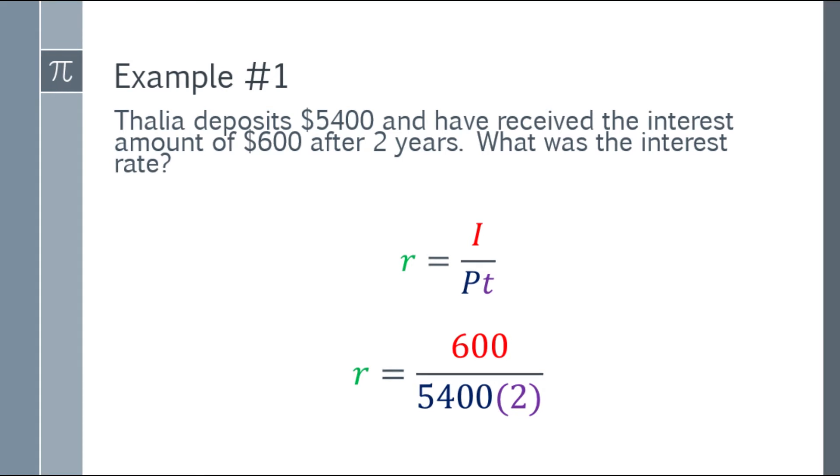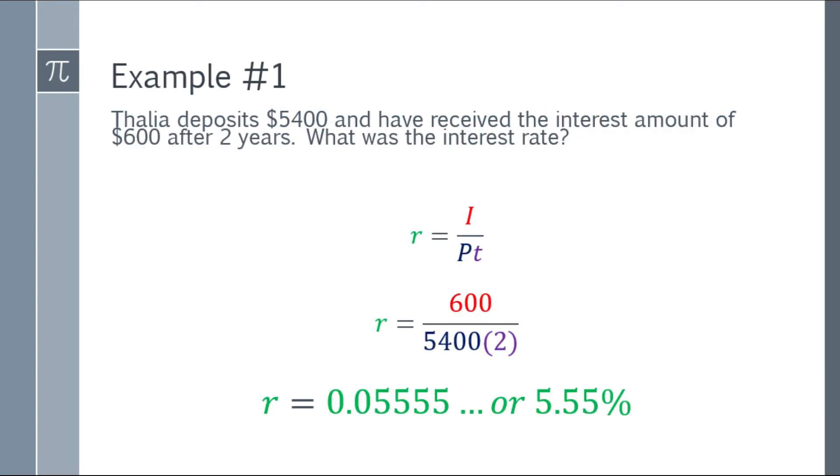So algebraically, you're going to solve it. The answer will be 0.05, repeating decimal ng 5. And multiply it by 100, so the interest rate is 5.55%.